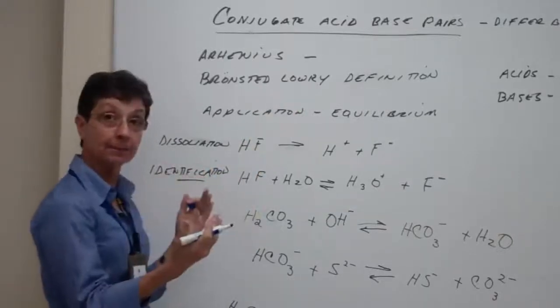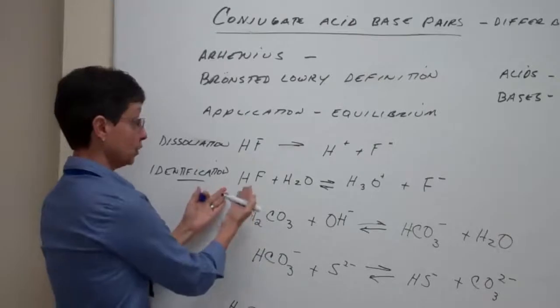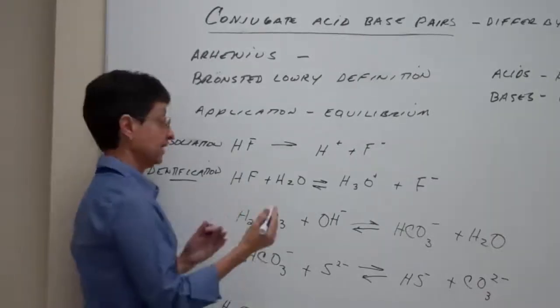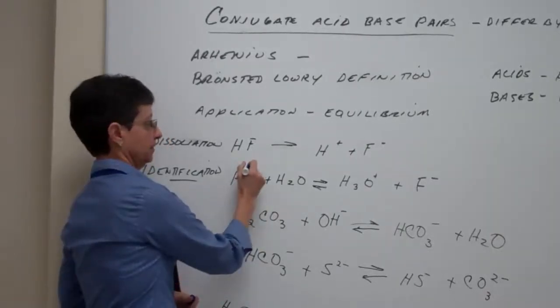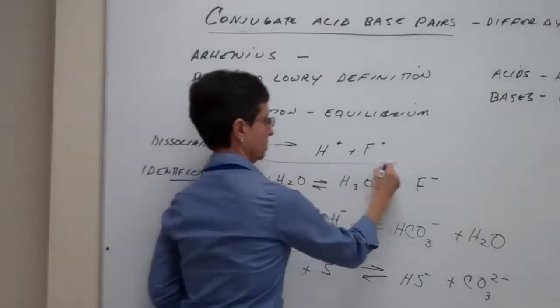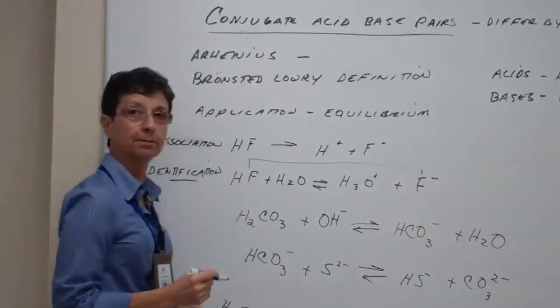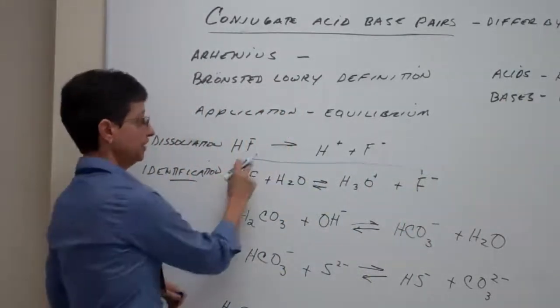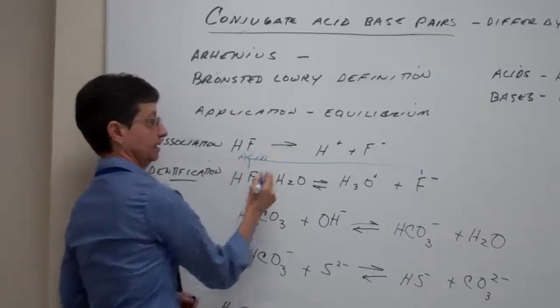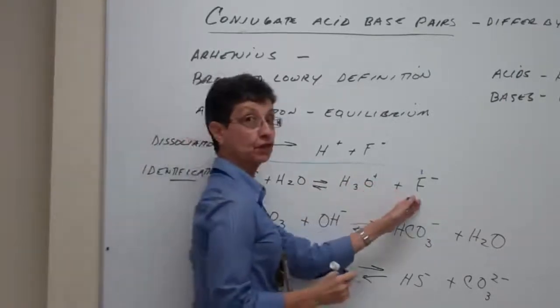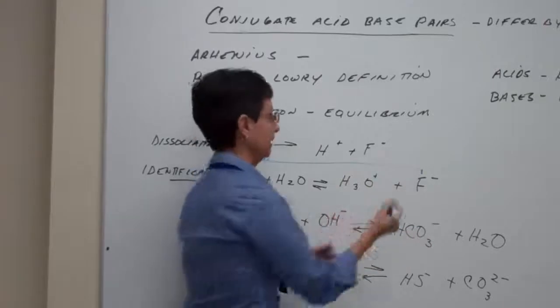So, let's mark them so that you are aware of which one's which. They must only differ by one proton. So, we have to find a pair that only differs by one proton. So here, let's pair them together. This one differs from this one by only one proton. So, this would be the acid, and F- would be its conjugate base.